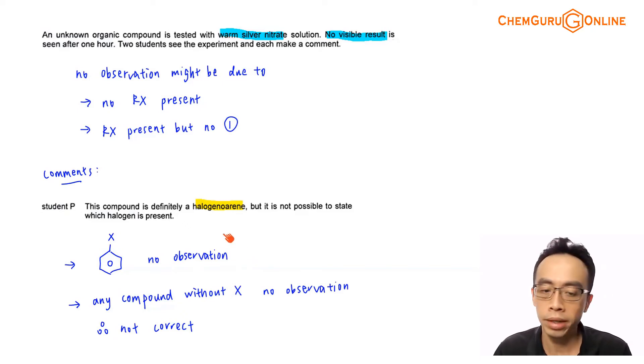Now if it is a halogenobenzene, then it is true that there will not be any observation, but is it the only possible explanation? That means, must this compound be definitely a halogenoalkane? You notice actually that's not true.